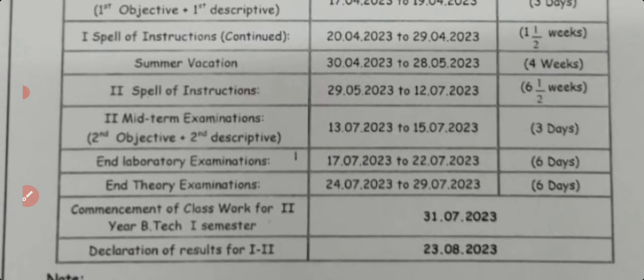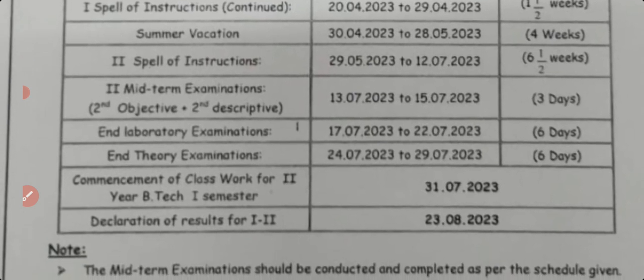The second spell of instructions is from 29/5/2023 to 12/7/2023 — around six and a half weeks. The eight weeks were split into two due to the summer vacation in between. After that, the second mid examination will be held.